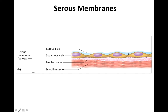Your lungs and your heart are constantly expanding and contracting as they work, and you do not want friction every time you take a breath or every time your heart beats. So this serous fluid helps to lubricate these membranes in your pericardial cavity and in your pleural cavity. Underneath these squamous cells, you can see a little bit of areolar tissue — epithelium always has to be supported by connective tissue — and then below that, a little bit of smooth muscle. So that's serous membranes.